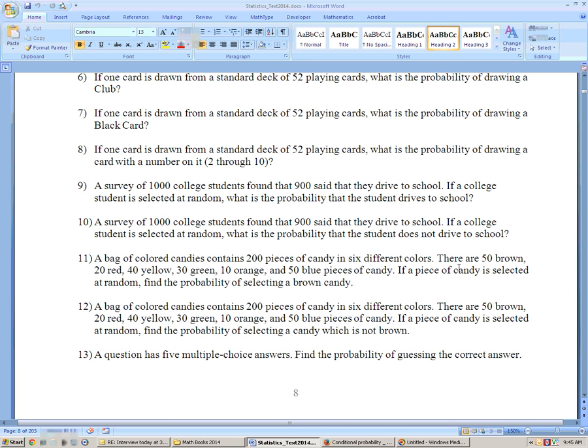On 11, there are 50 different color pieces of candy. If it's selected at random, what's the probability of a brown candy? Well, brown, there are, sorry, there's 200 pieces total, and there's 50 that are brown, so the probability of getting a brown piece of candy is 50 out of 200, and that would be 1 fourth of them.